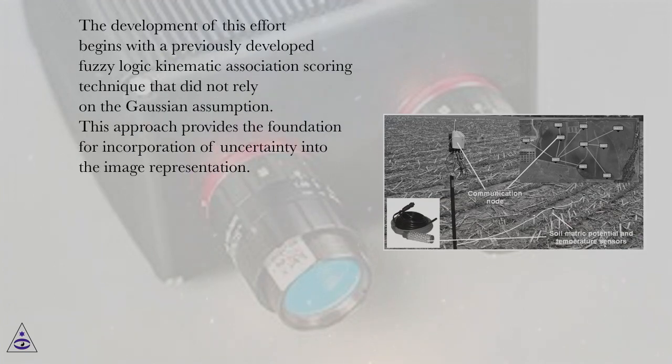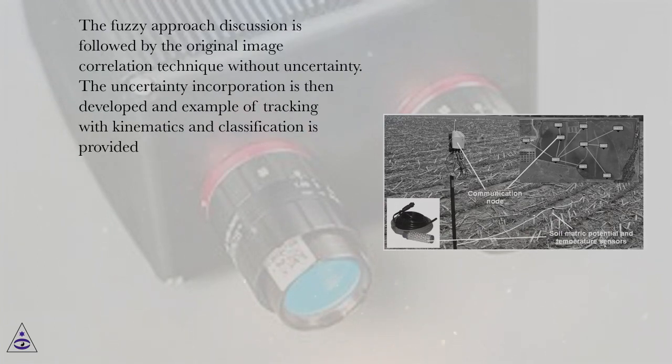The development of this effort begins with a previously developed fuzzy logic kinematic association scoring technique that did not rely on the Gaussian assumption. This approach provides the foundation for incorporation of uncertainty into the image representation. The fuzzy approach discussion is followed by the original image correlation technique without uncertainty. The uncertainty incorporation is then developed and an example of tracking with kinematics and classification is provided.